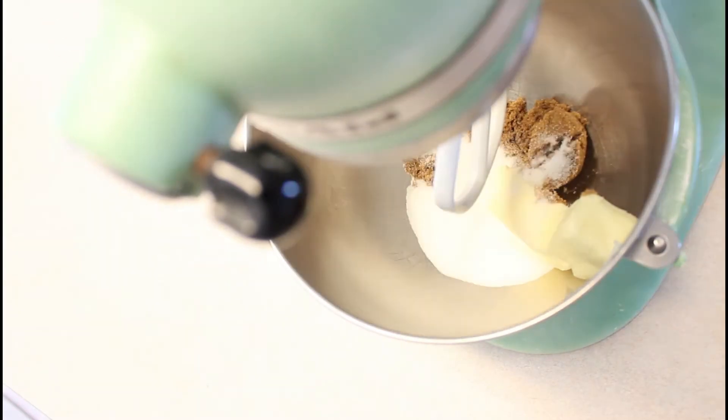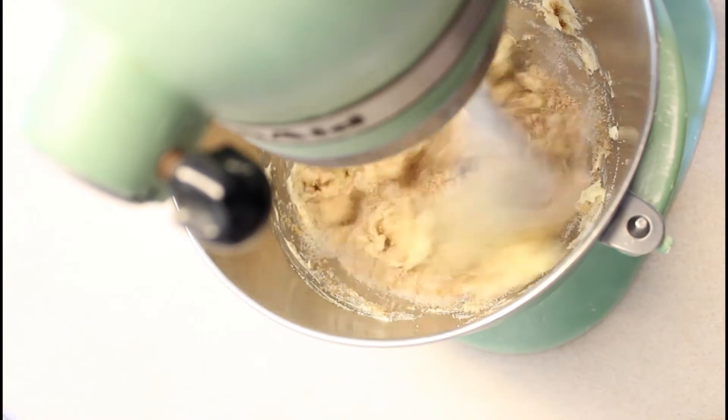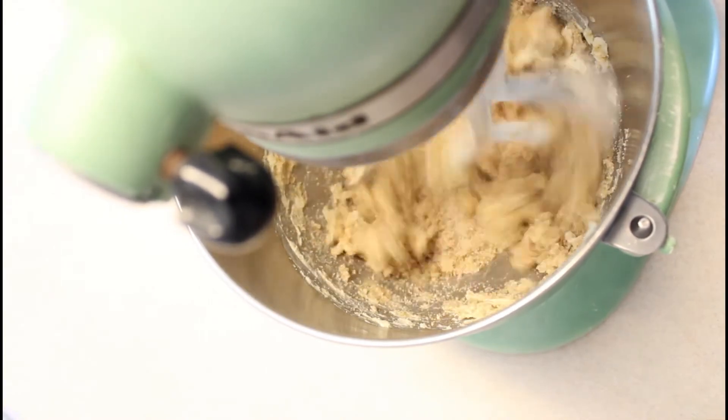For the cookies, you need two sticks of butter softened, half a cup of dark brown sugar, and a cup of granulated sugar. Cream those together.